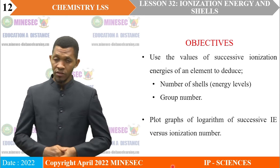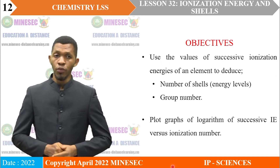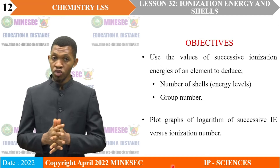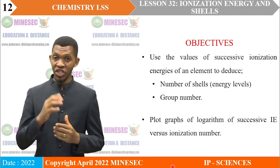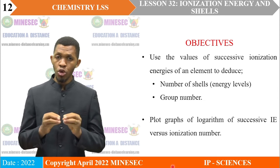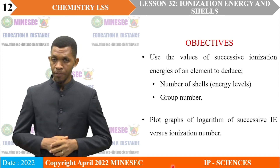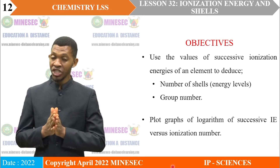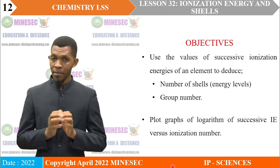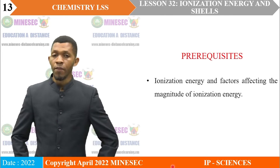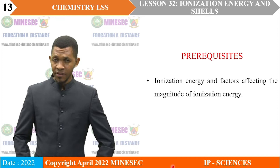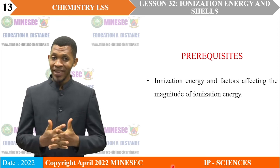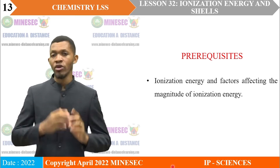By the end of this lesson, you should be able to use the values of successive ionization energies of an element to deduce the number of shells — that is, the energy levels — and to deduce the group number of the element. You should also be able to plot graphs of the logarithm of successive ionization energy versus ionization number. In order to effectively understand this lesson, you must have mastered ionization energy and factors affecting its magnitude.